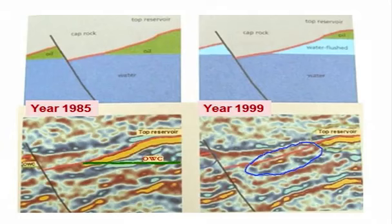After 14 years, it is possible to get a picture of what is happening inside the reservoir. The effect of pressure and saturation can be identified as well as a rise in the OWC, the oil-water contact line.